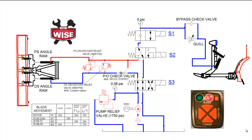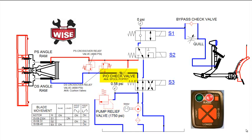There are two crossover relief valves for the angling circuit: the driver side crossover relief valve and the passenger side crossover relief valve. There is one main pump relief valve, one pilot operated check valve — also known as PO check valve or spool poppet valve — one bypass check valve, and one quill.